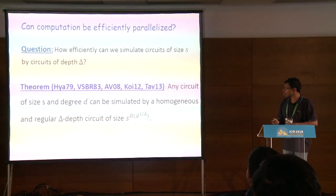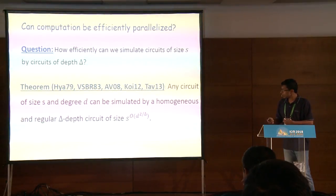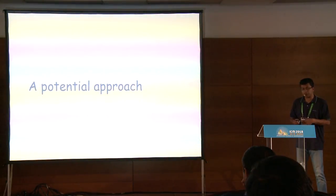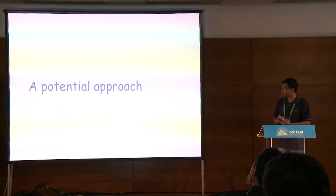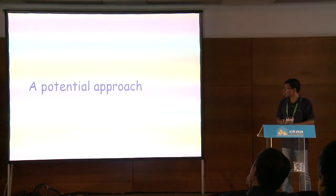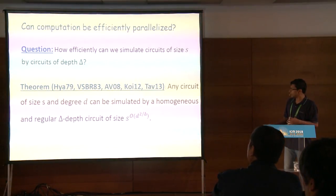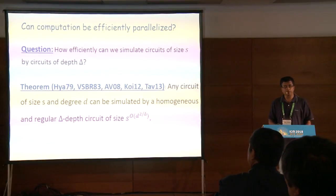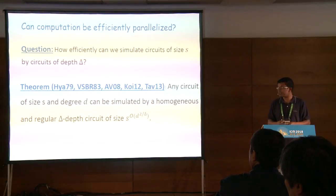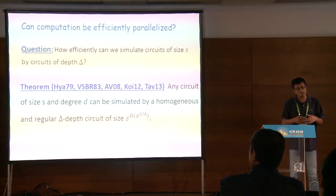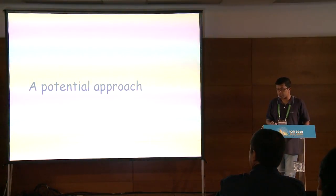We'll come back to whether this depth reduction is optimal. Now, this depth reduction also opens up a potential approach to attacking the VP versus VNP problem. By choosing a suitable value of delta — specifically depth 4 — we reduce any computation to a depth-4 computation. This makes the computation easier to analyze, and hopefully that might help us prove lower bounds.